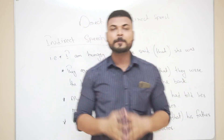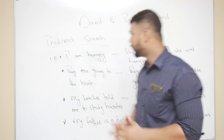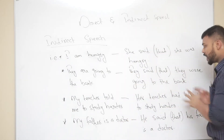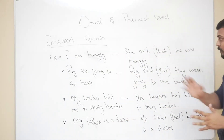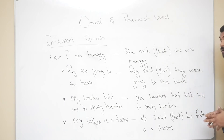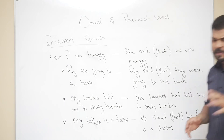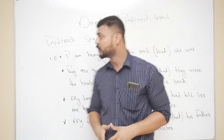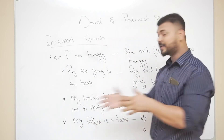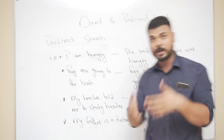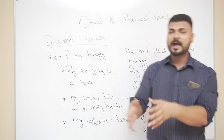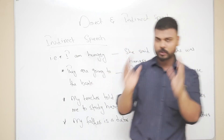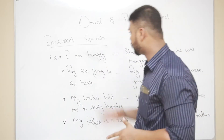Now we are going for the examples of indirect speech. I have written some sentences here along with their conversions into indirect speech. Remember, verb tenses do change: present simple changes into past simple, past simple changes into past perfect — and the rest I will let you know in my next video.